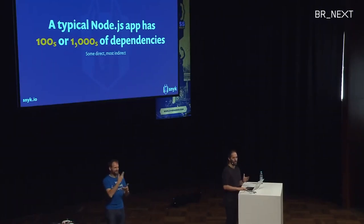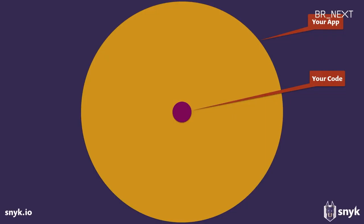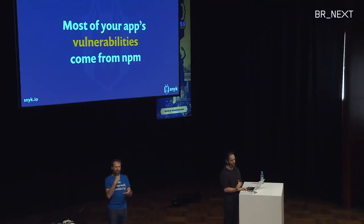npm has a ridiculous number of downloads and packages. A typical Node application - and this is increasingly the pattern in front-end JavaScript as well - has hundreds, oftentimes thousands of dependencies. One study put it at 350 on average. This is your app, and this is your code. You could create all that value by just writing that little dot of code. So it's a good thing, but also a risky one from a security perspective. When you think about security, remember that most of your app's code comes from NPM, which also means most of your app's vulnerabilities come from NPM.